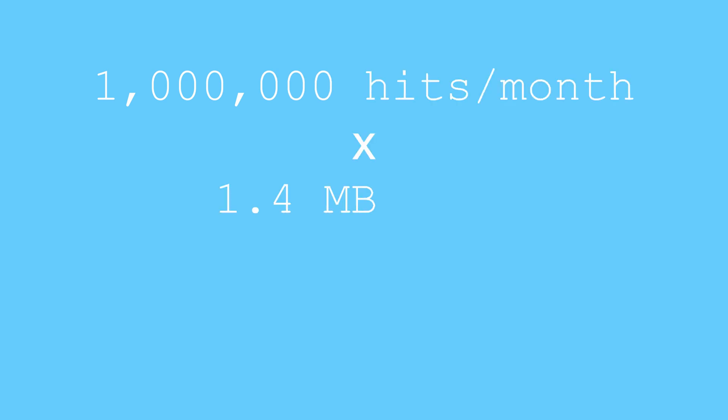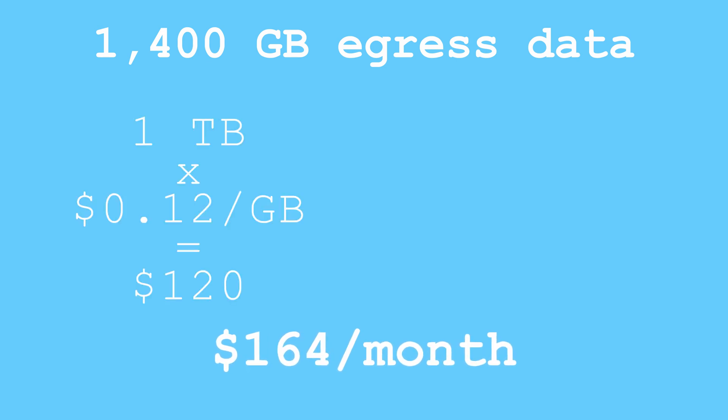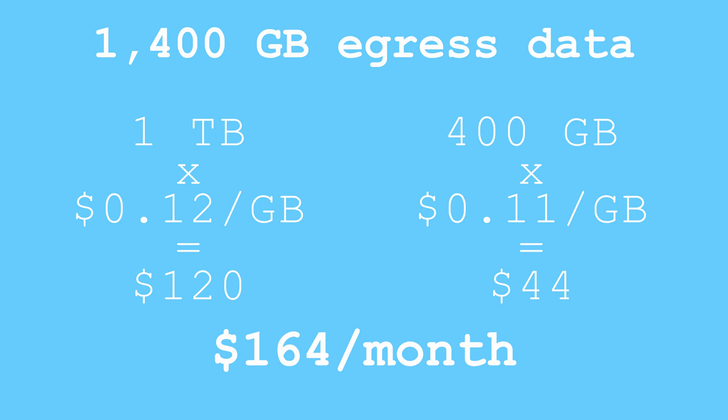If your website gets 1 million page views per month, you'll pay $166 for egress data — $120 for the first terabyte and $44 for the next 400 gigabytes. Keep in mind that this is pricing just for outgoing network traffic. In situations where you are not taking advantage of the free tier, websites will typically have to pay hosting fees on top of this.